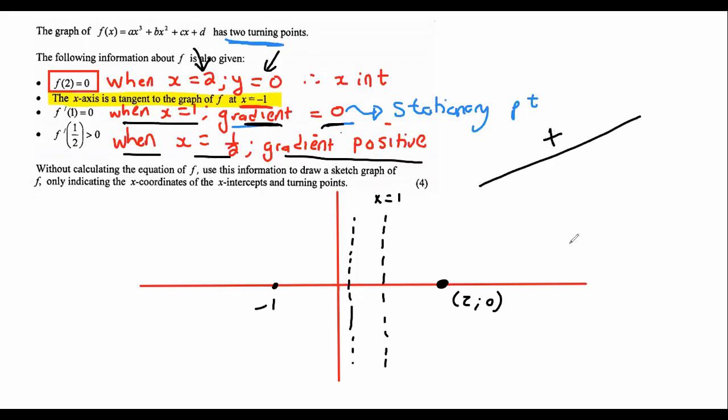That's a positive gradient. And if it goes down, then it must be a negative gradient. So when x is 1/2, we have a positive gradient.